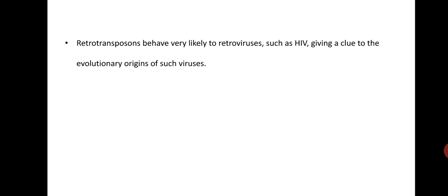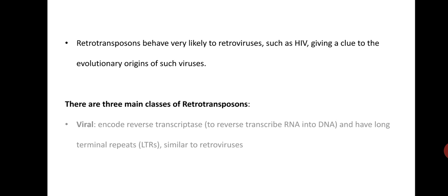Retrotransposons behave very similarly to retroviruses such as HIV, giving a clue to the evolutionary origin of such viruses. There are three main classes of retrotransposons. Today we are going to see the viral retrotransposons for the mu bacteriophage transposons, which encode reverse transcriptase to reverse transcribe RNA into DNA. They have long terminal repeats (LTRs) that are very similar to retroviruses.